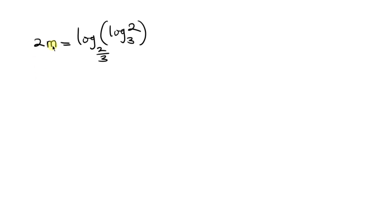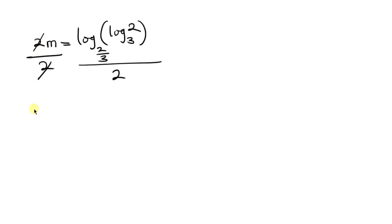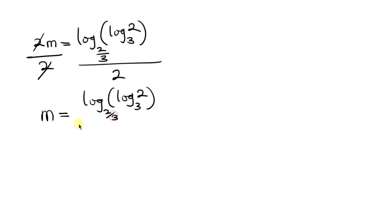Since we're looking for the value of m, I'll divide both sides by 2. The 2s cancel, leaving m equal to log of (log 2 base 3), base 2 over 3, all over 2. This is our final solution.